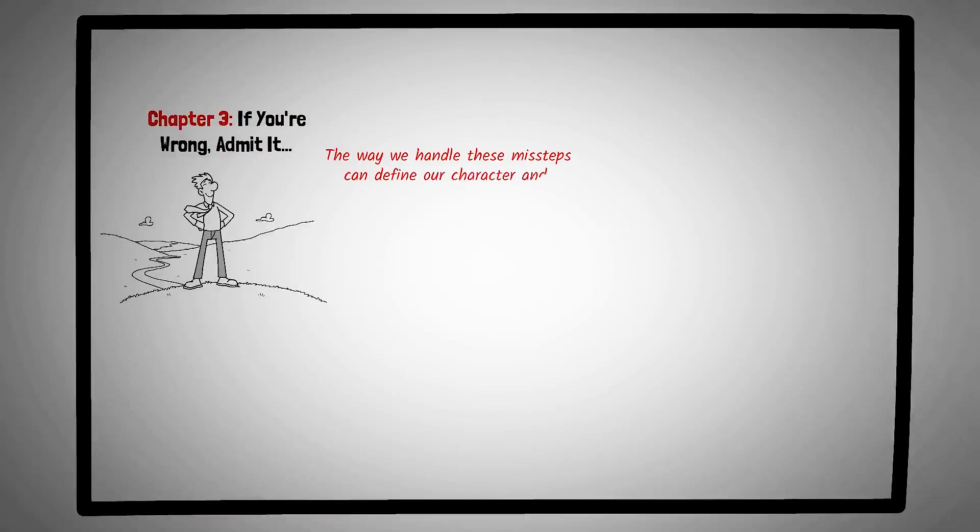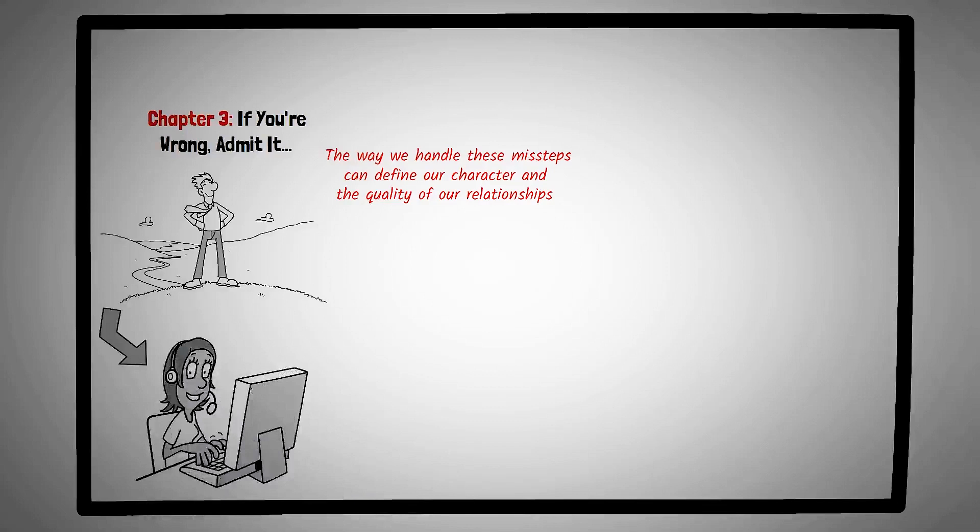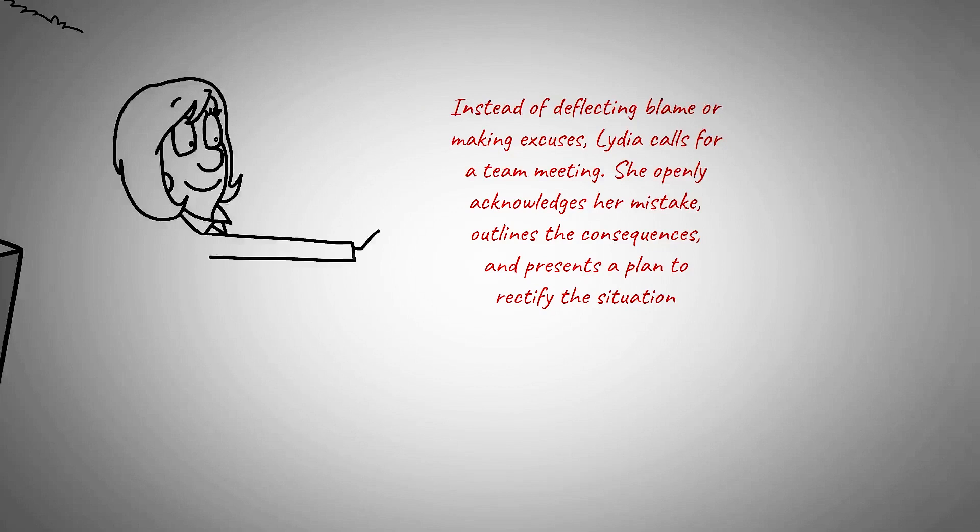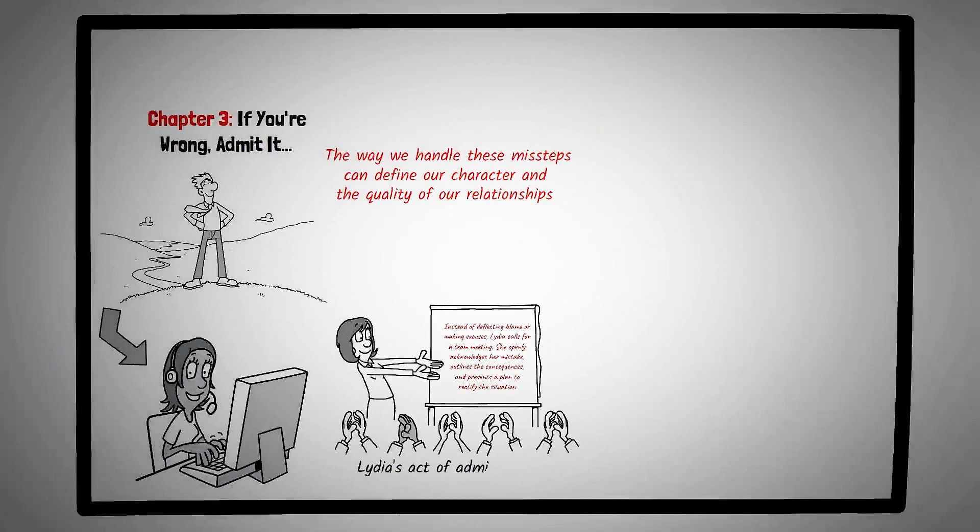Chapter three, if you're wrong, admit it. In the journey of life, mistakes are inevitable. However, the way we handle these missteps can define our character and the quality of our relationships. This chapter underscores the power and integrity of acknowledging our errors and the respect it garners from others. Think of Lydia, a project manager at a tech company. During a crucial phase of a project, she makes an oversight that results in a significant delay. Instead of deflecting blame or making excuses, Lydia calls for a team meeting. She openly acknowledges her mistake, outlines the consequences, and presents a plan to rectify the situation. Her team, instead of being frustrated, appreciates her transparency and leadership. They rally together to address the setback, and the project ultimately succeeds. Lydia's act of admitting her error not only salvaged the project, but also strengthened the trust and respect her team had for her.